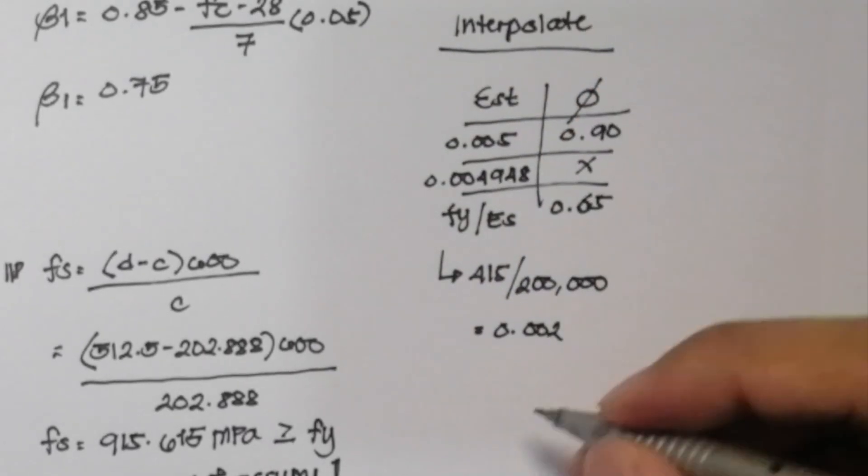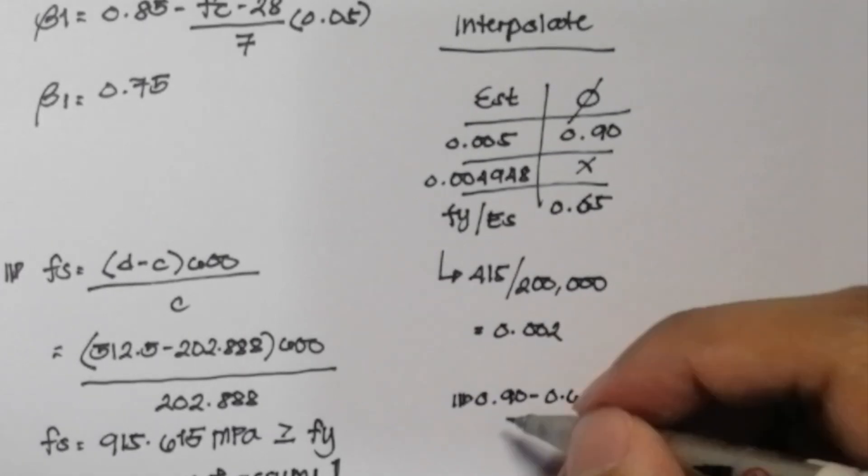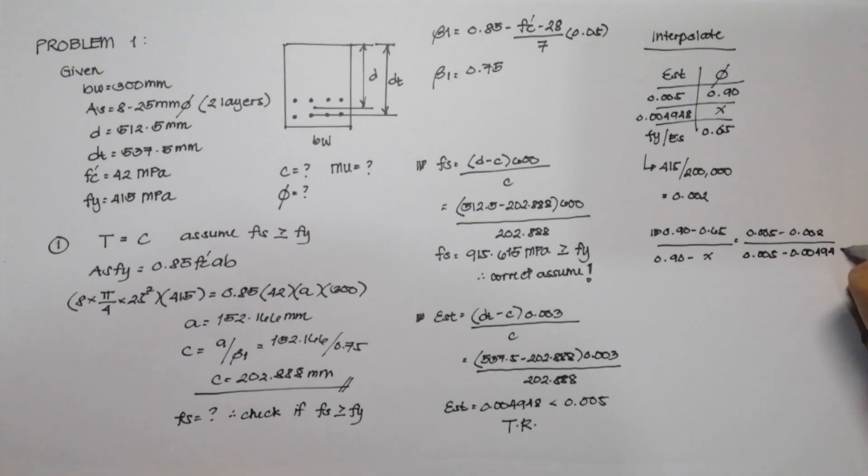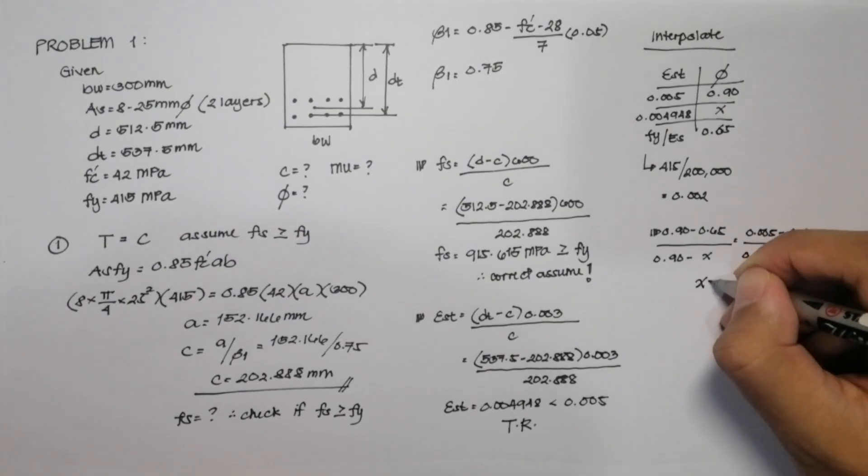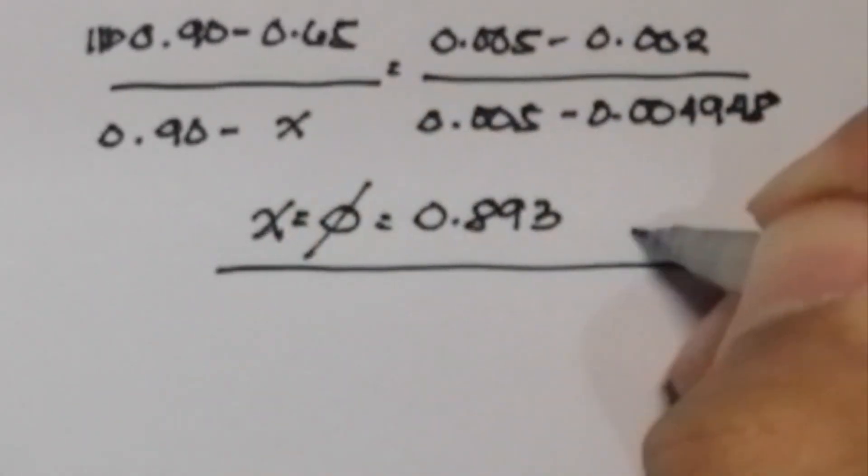By linear interpolation, we can create a proportion of values. To solve for X or our phi or our reduction factor, we can get a value of 0.893, and that is our answer for the second question.